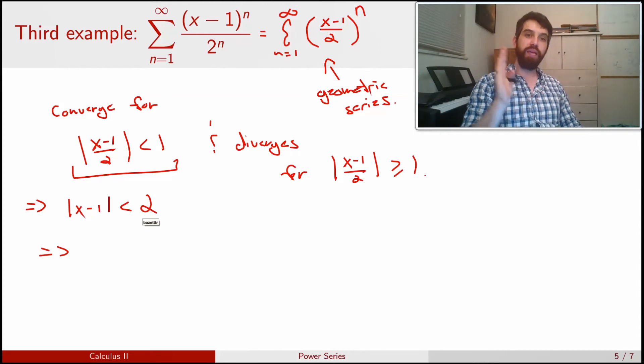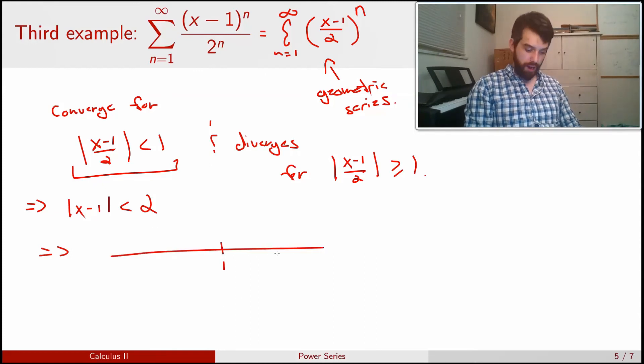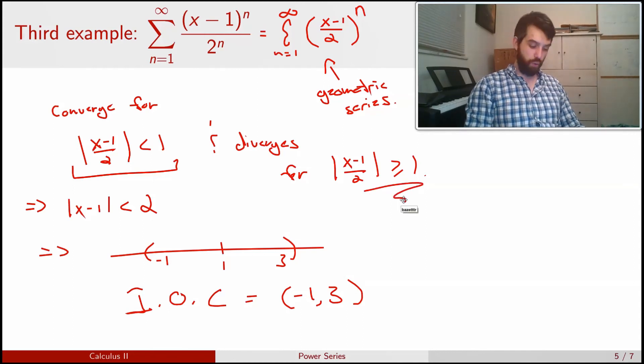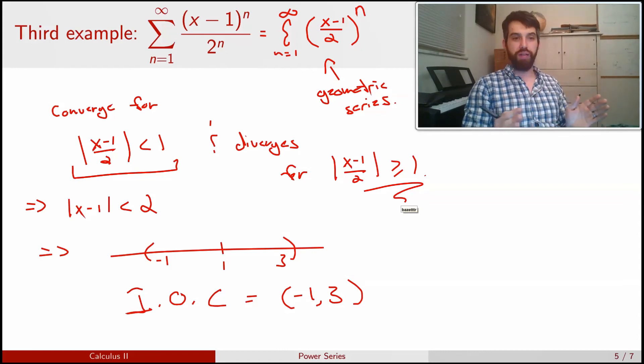So my x's need to be less than 2 away from the value of 1. So if I have my number line here and I put a value of 1 in, then what my interval does is it goes up to 3 and it goes down to minus 1. In other words, my interval of convergence is open bracket minus 1 up to 3. And they're open brackets because I'm not including where they're equal. But the equal side was over here. It was greater than or equal to 1. So we know it diverges if it's equal. So it's the open interval minus 1 to 3.